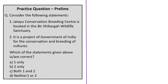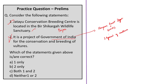The third question asks to consider two statements about the Jatayu Conservation Breeding Centre. The first statement says it is located in Bir Shikargah Wildlife Sanctuary — this is correct. The second statement says it is a project of the Government of India — this is wrong. It is a joint project of the Haryana Forest Department and the Bombay Natural History Society, a collaborative initiative to save three endangered vulture species. The correct answer is option A: 1 only.